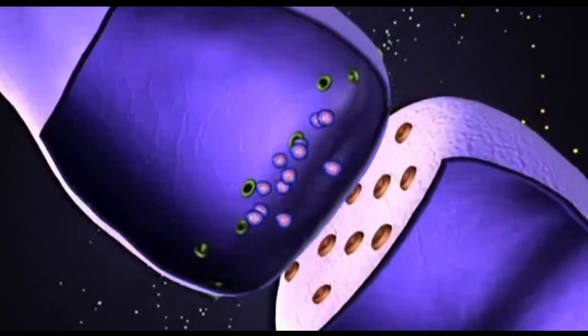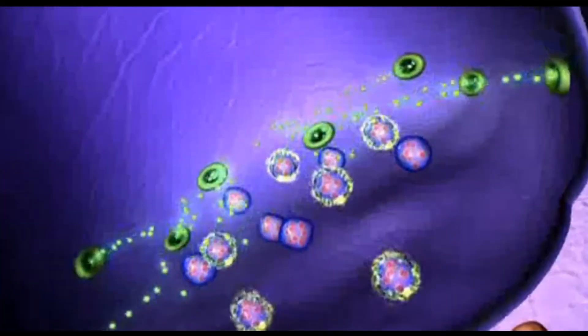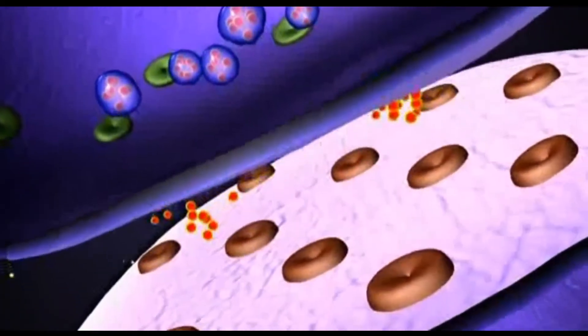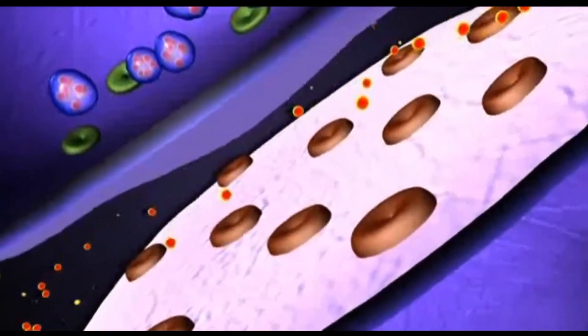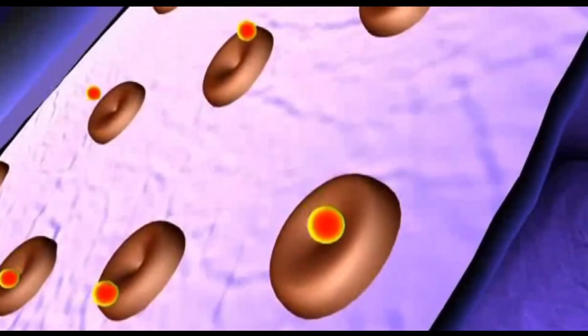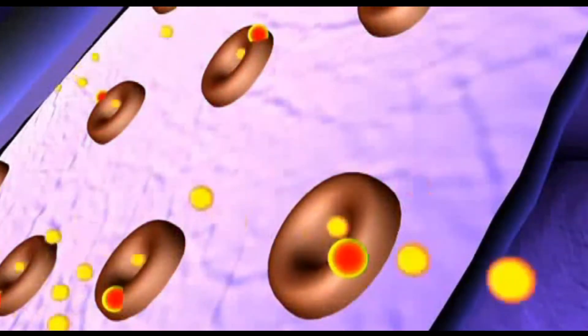They let calcium ions into the nerve terminal. Calcium ions then activate small packets of neurotransmitter, which release their contents into the gap of this synapse. Some of them diffuse away, but others activate receptors on target neurons.